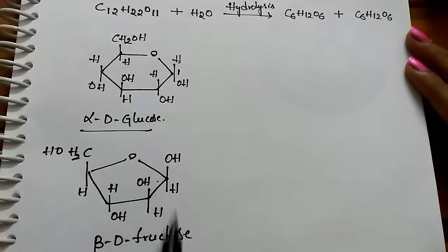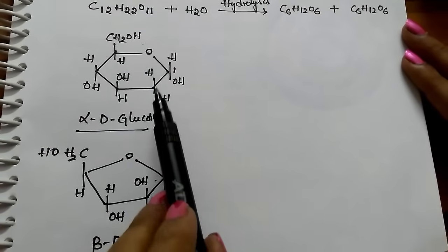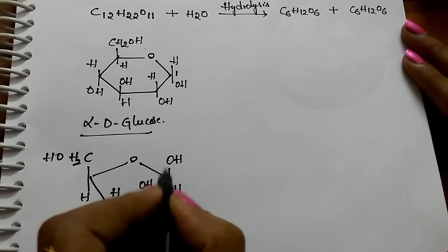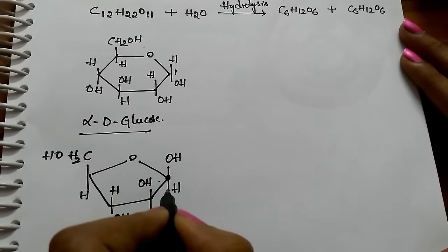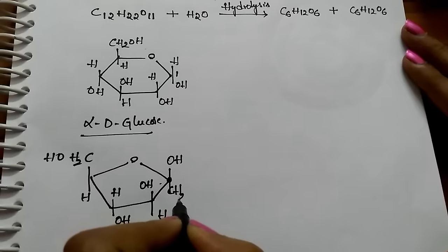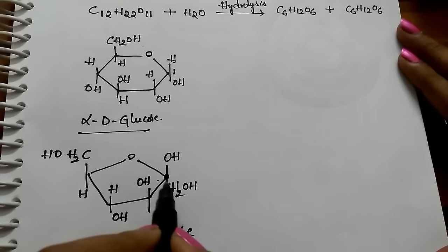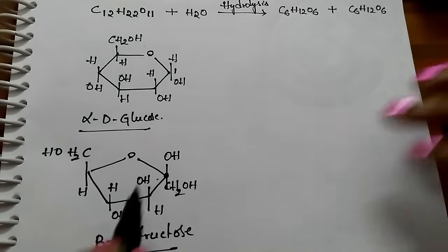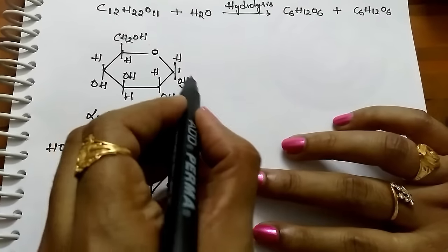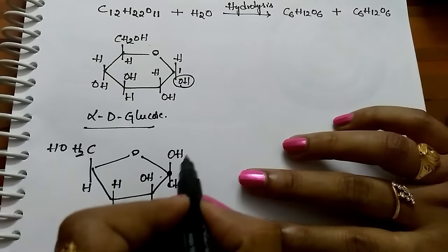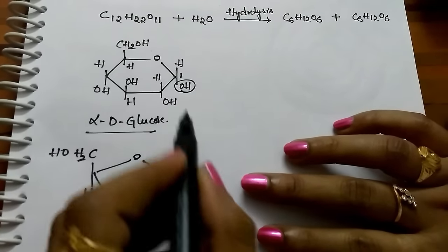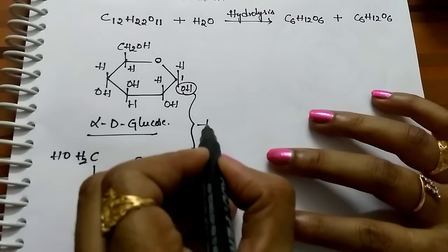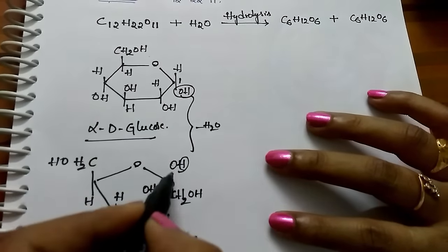This is the first carbon of alpha-D glucose. The CH2OH shown here is the second carbon of beta-D fructose. The first carbon OH of glucose and the second carbon H of fructose both undergo loss of a water molecule.